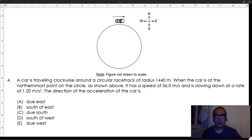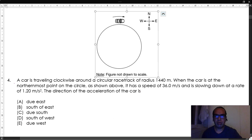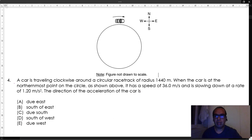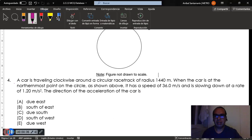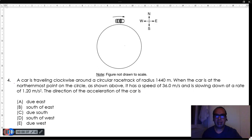The radial component of the acceleration will always be in the direction of the center of the circle. Therefore, your radial acceleration is going this way, and given that the velocity is